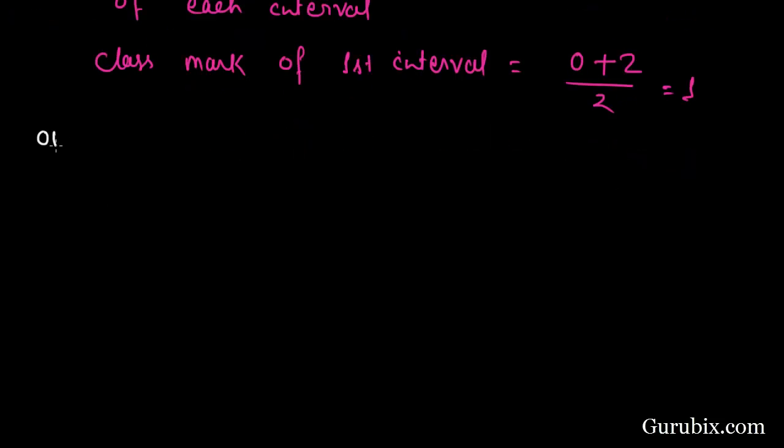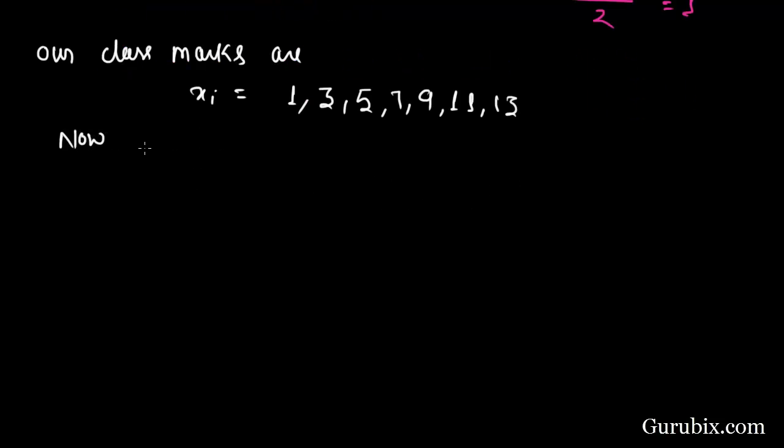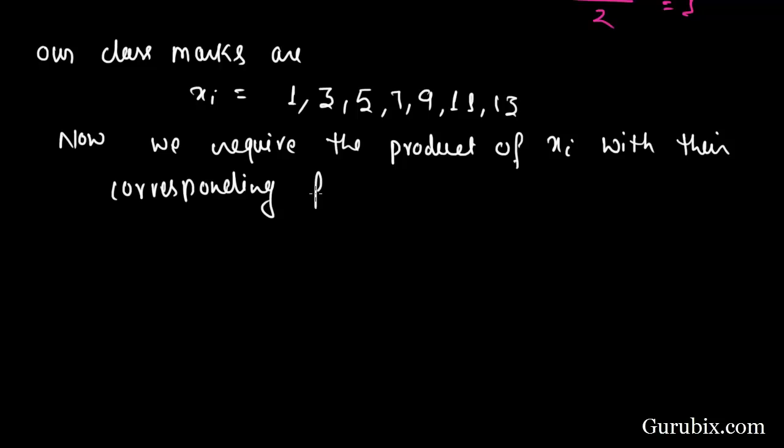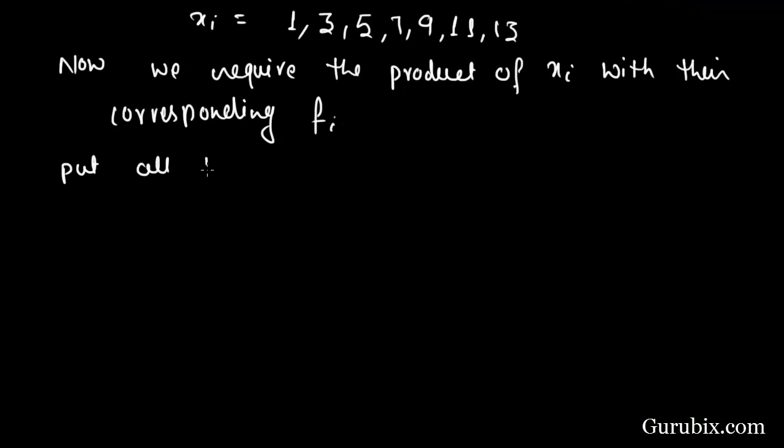Similarly, we can find the remaining class marks. Our class marks are 1, 3, 5, 7, 9, 11, and 13. Now we require the product of xi with their corresponding fi.